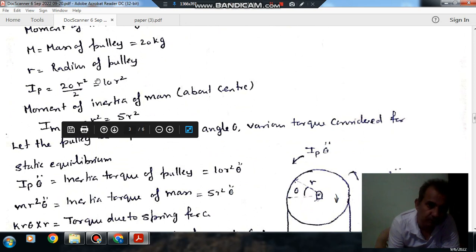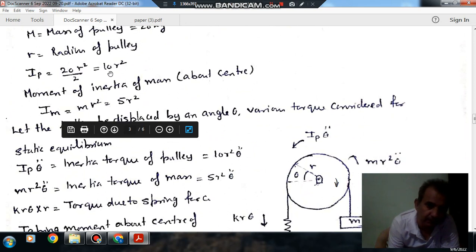And mass of pulley is 20 kg, radius of pulley is R, and IP is 10R square. Similarly, if you represent the moment of inertia of this mass about the center by IA, then IA is MR square or 5R square.